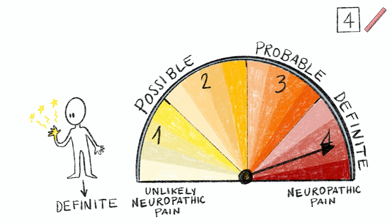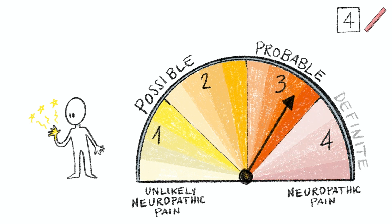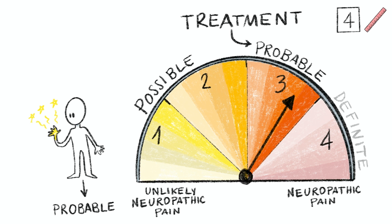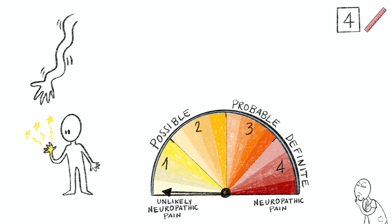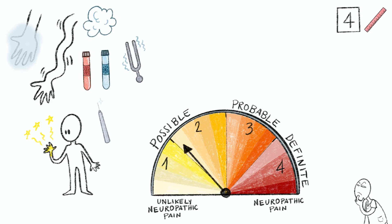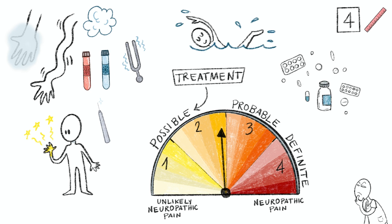Guidelines recommend neuropathic pain-specific treatments such as neuropathic pain medication from probable neuropathic pain upwards. If only the requirements for possible neuropathic pain are met but a clinician has very strong suspicion — for instance due to relevant motor signs that fit the symptom picture or very high ratings on neuropathic pain screening tools — treatments targeting neuropathic pain may still be appropriate.